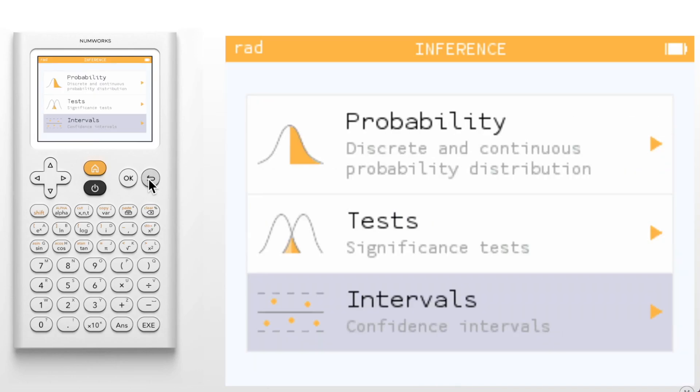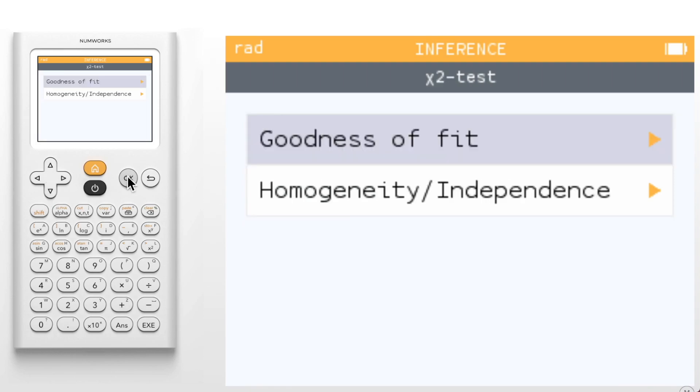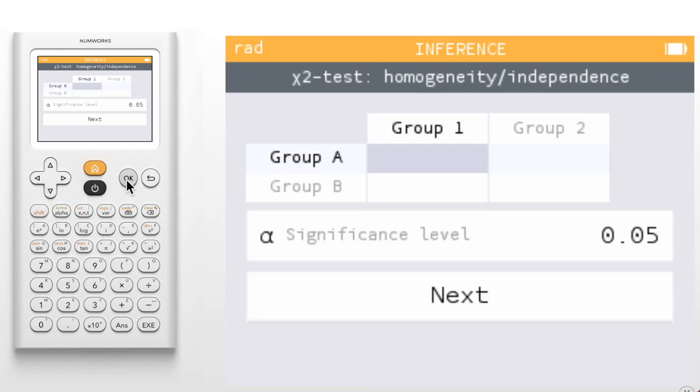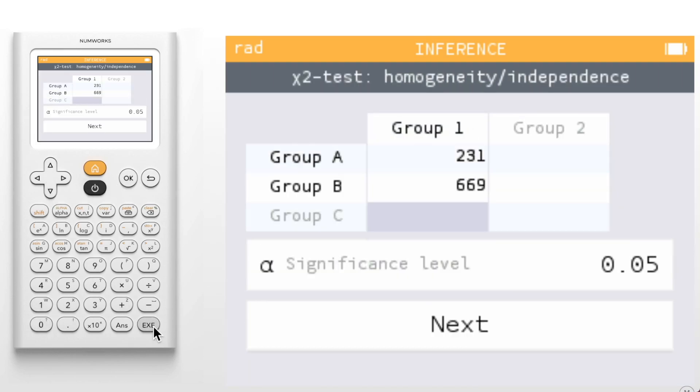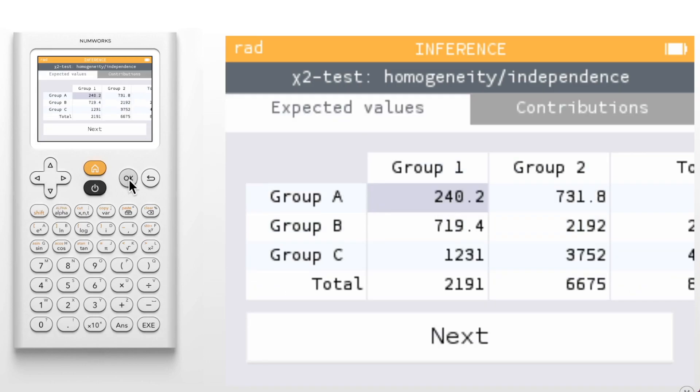Finally, chi-squared tests for homogeneity and independence now calculate the contributions to the chi-squared value. We'll enter a few example data points and then find these contribution values in the same screen as the expected values by switching to the contributions tab.